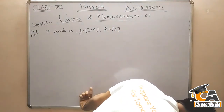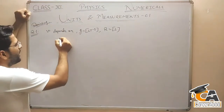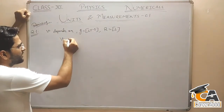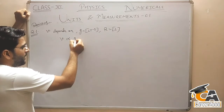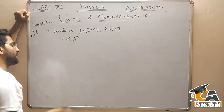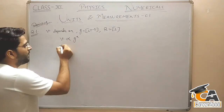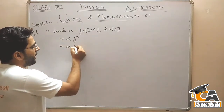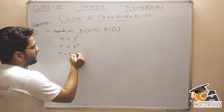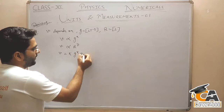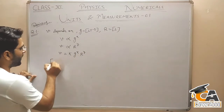The radius of the planet is also dependent. What is the dimension? L. So escape velocity is proportional to G to the power of X and R to the power of Y. Escape velocity is equal to constant × G^x × R^y.